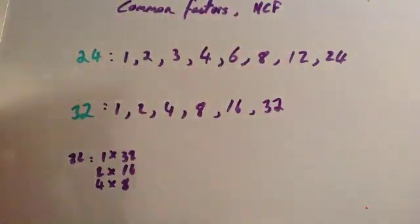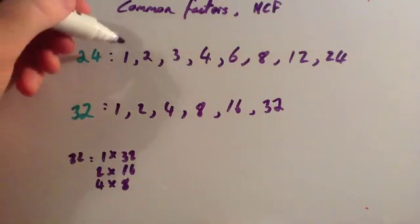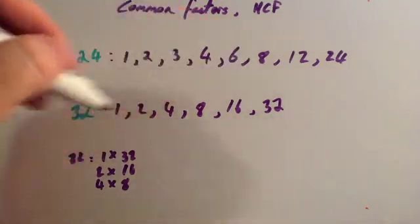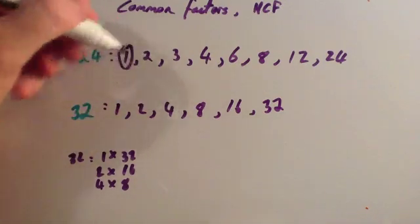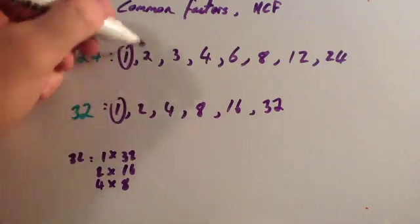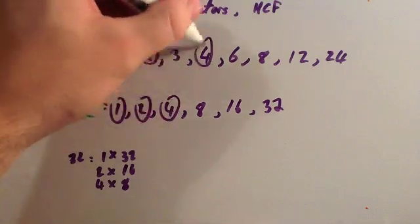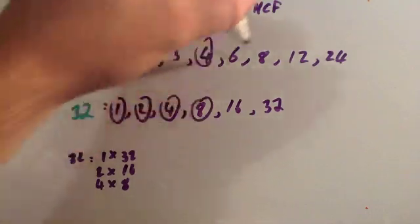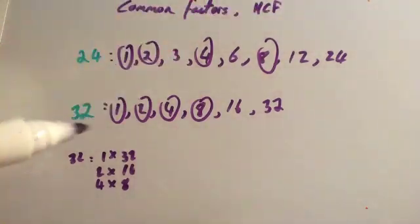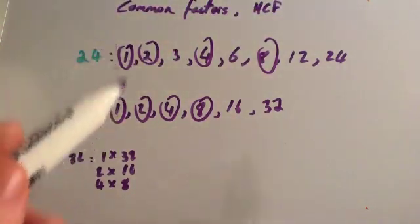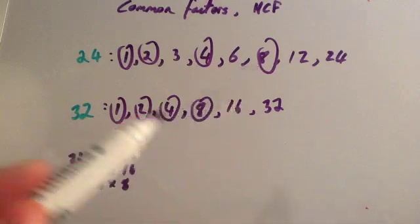So the common factors of 24 and 32 — well, they're the ones that appear in both lists. So the common factors would be 1, 2, 4 and 8. And none of the rest are common factors. So the common factors are 1, 2, 4 and 8.